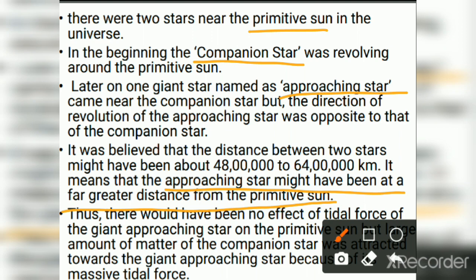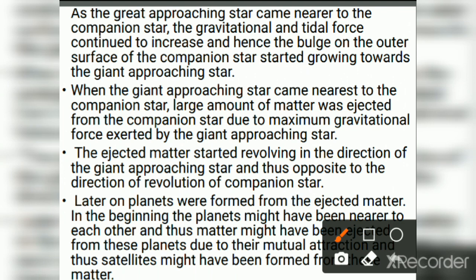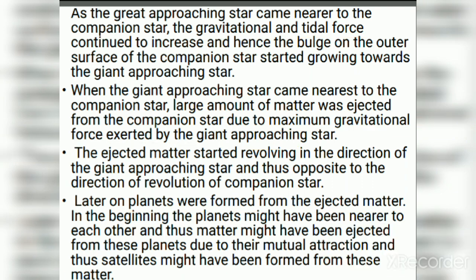As the giant approaching star came nearer to the companion star, gravitational and tidal forces continued to increase, and a bulge on the outer surface of the companion star started growing towards the approaching star. When the approaching star came nearest, a large amount of matter was ejected from the companion star due to maximum gravitational force. The ejected matter started revolving in the direction of the giant approaching star, thus opposing the direction of revolution of the companion star. Later, planets were formed from this ejected matter.